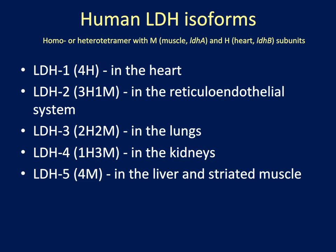The H and M notation stand for muscle and heart respectively. The muscle subunit is encoded in the LDHA gene and the H subunit is encoded by the LDHB gene. The LDH isoforms are expressed to different extents in different tissues. LDH1, which is the four H or four heart subunits, is expressed in the heart. LDH5, which has the four muscle subunits, is expressed in the liver and striated muscle.